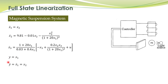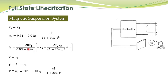To compute the relative degree, we take the first derivative of the output with respect to time — that is, x1 dot, which is equal to x2 by this equation. The control input u is not appearing here. We take the second derivative: y double dot is equal to x2 dot, which is given by this expression. Again, the control input is not there, so we take the third derivative.